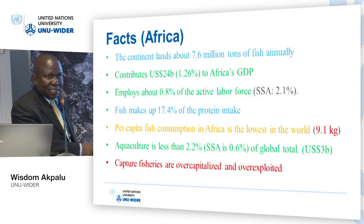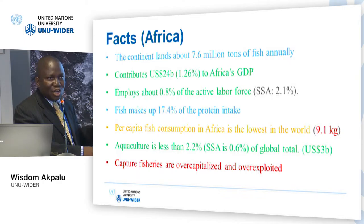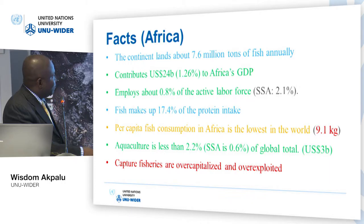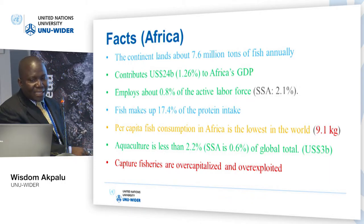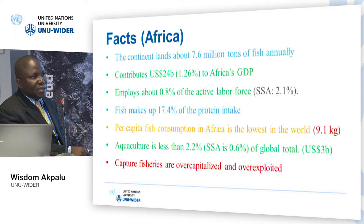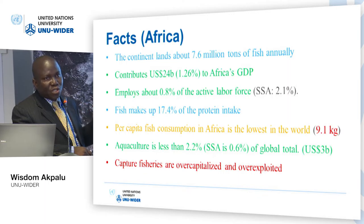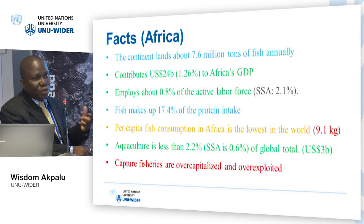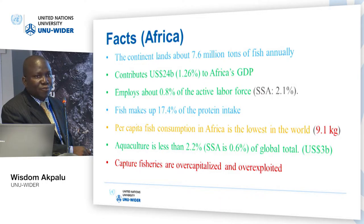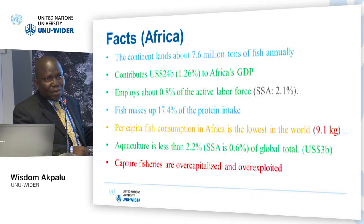Now let me present some facts. We know from those graphs that as a society we should aim at the level of effort that gives us the highest economic benefits — so why don't we do that? But before those details, let us appreciate some facts about Africa. The continent lands about 7.6 million tons of fish annually. Recent estimates indicate that fisheries contributes about 1.26% to the continent's GDP, which is about $24 billion in revenue. Of this, aquaculture contributes around $3.3 billion — quite low.